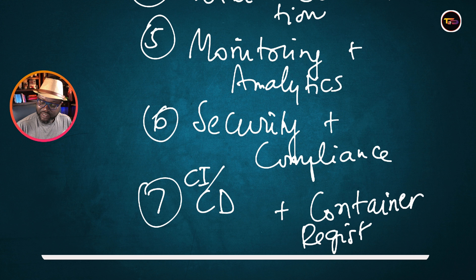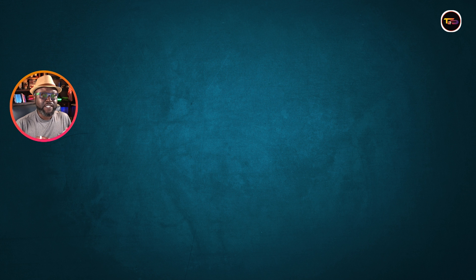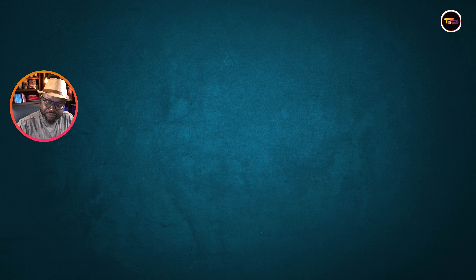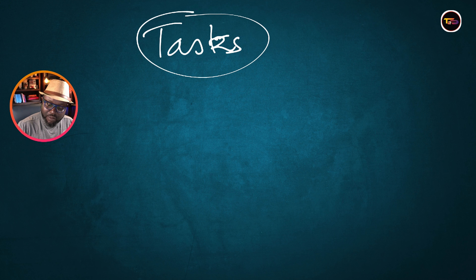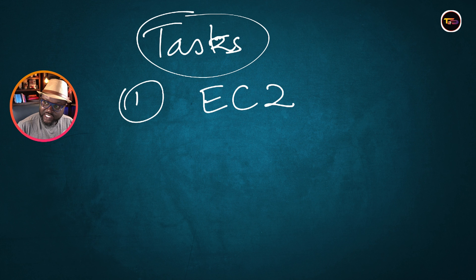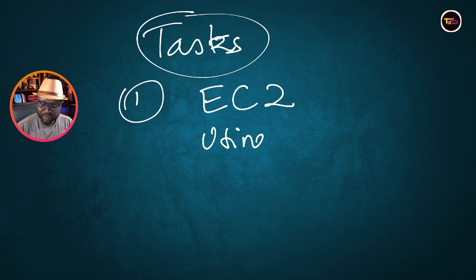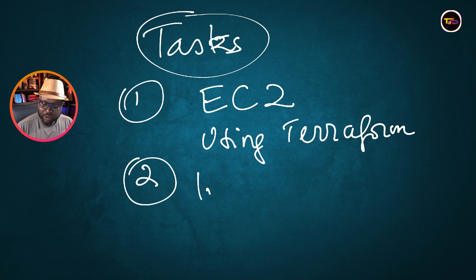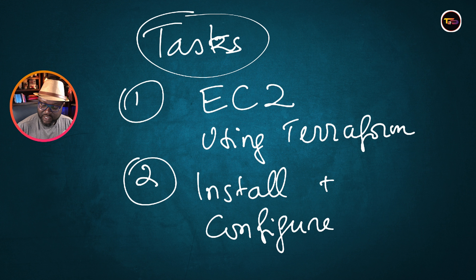Now, what we want to do next is the demo. We'll be doing two things: number one, we're going to create an EC2 instance using Terraform, and number two, we will install and configure GitLab on our EC2 instance.